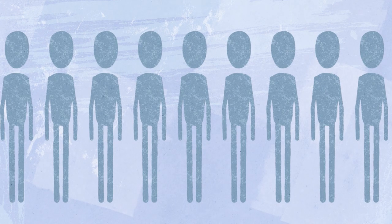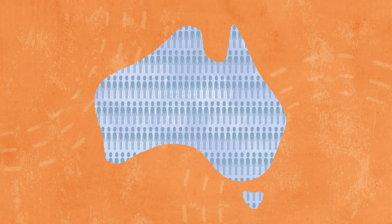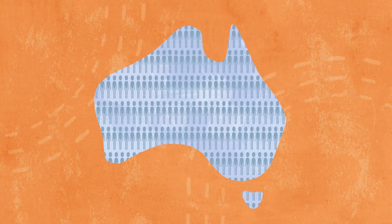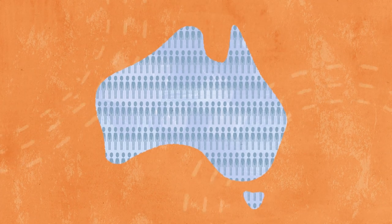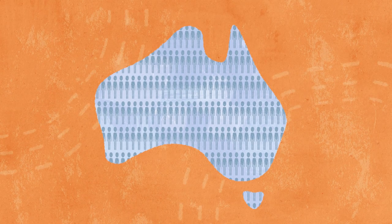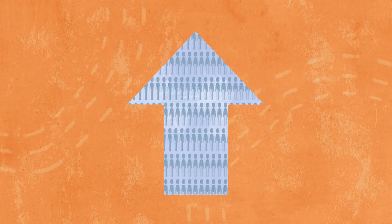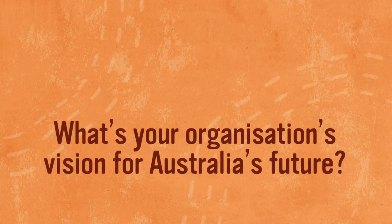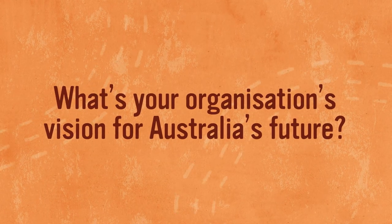Every new RAP partner joins a community of thousands of diverse organisations across Australia, all working together to maximise impact and contribute to the National Reconciliation Movement. What matters most is being involved. A RAP is an opportunity to make an impact on the direction of the nation. So, what's your organisation's vision for Australia's future?